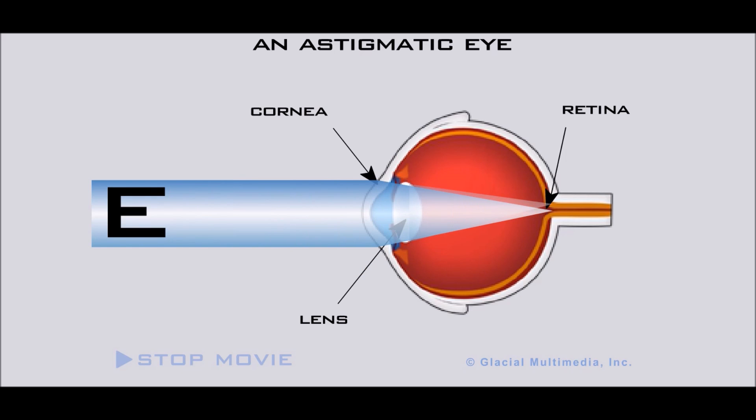Astigmatism can occur alone, but is most often combined with nearsightedness or farsightedness.